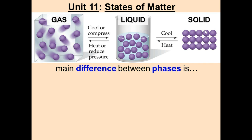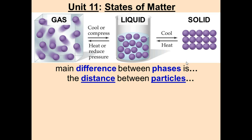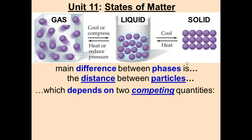The main difference between each of the phases you can see from the pictures. Notice how gases have so much space in the middle, liquids have a little bit less space but they can still move, and solids are tightly packed. The main difference between the phases is the distance between the particles — gases have the most space while solids have barely any space in the middle.